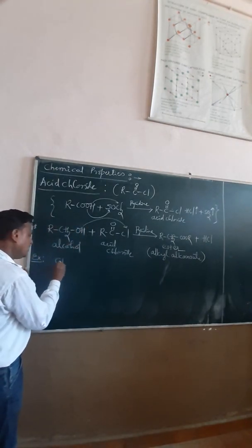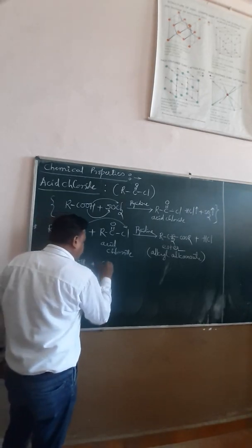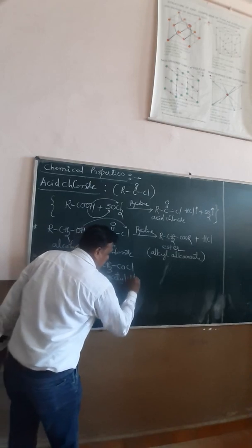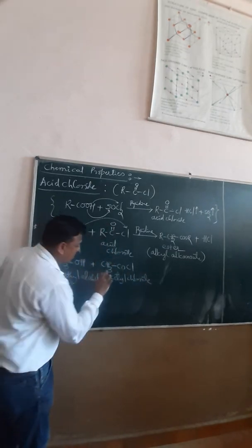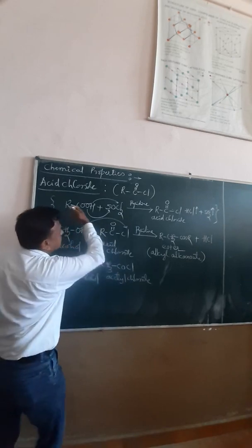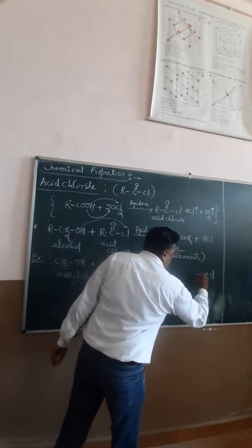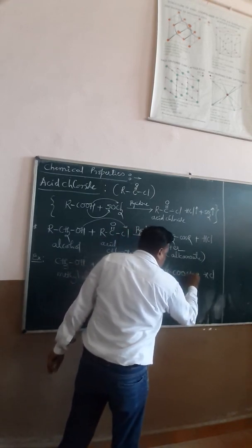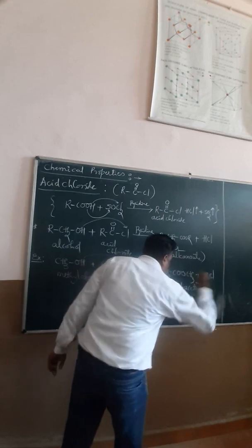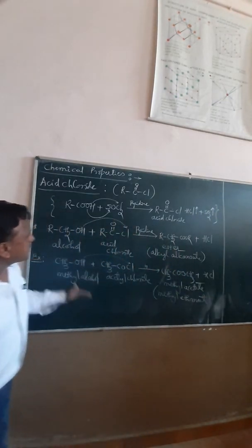Consider an example: methyl alcohol (CH₃OH) reacts with acetyl chloride (CH₃COCl) — the acid chloride derived from acetic acid (CH₃COOH). In the presence of pyridine, HCl is released. The product formed is CH₃COOCH₃, which is methyl ethanoate. This is also a method of esterification — by using acid chloride we can prepare esters.